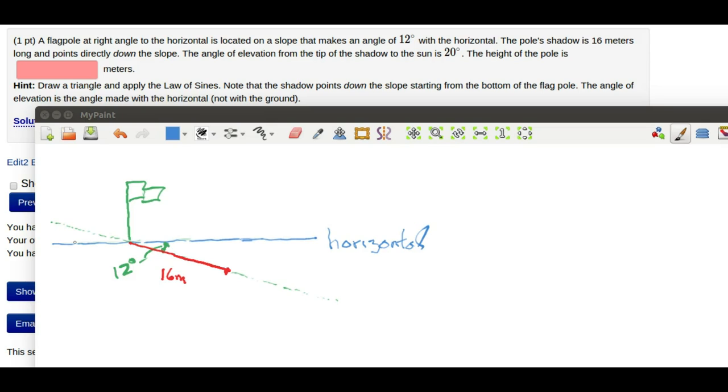The flagpole is perpendicular to the horizontal. The ground, however, has a slope of 12 degrees. And the shadow that's cast onto that sloped ground is 16 meters.